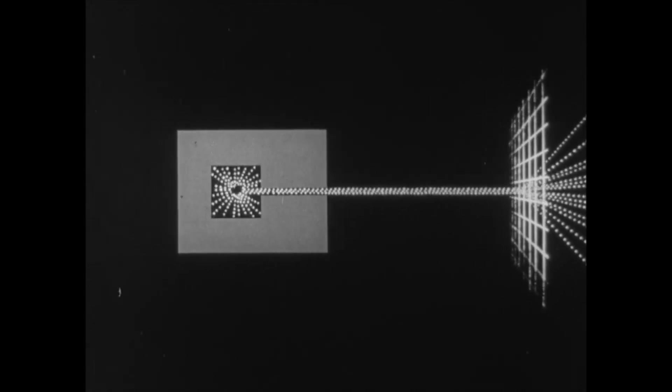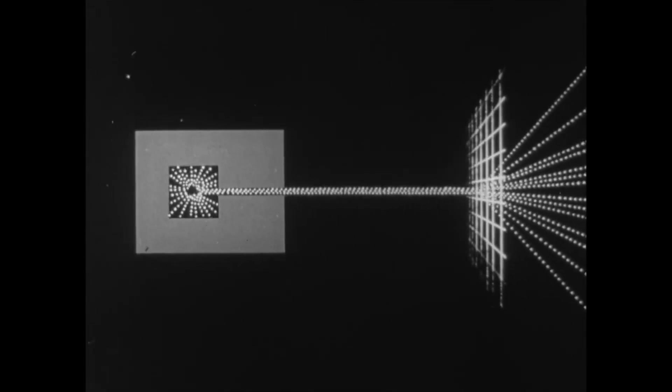By moving the screen, Rutherford discovered that approximately one in 8,000 alpha particles was not just scattered, but reflected back.